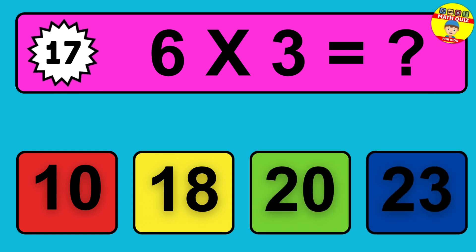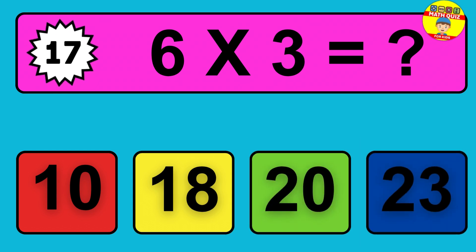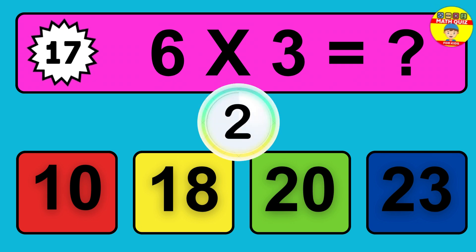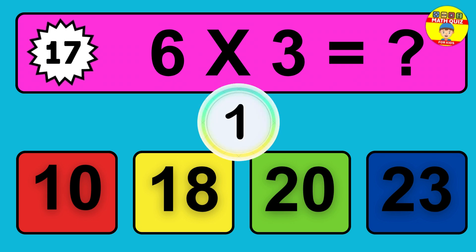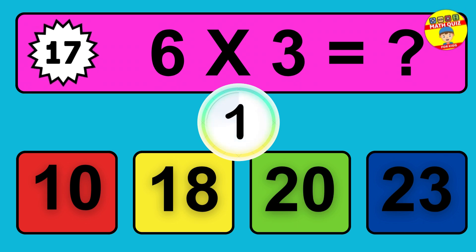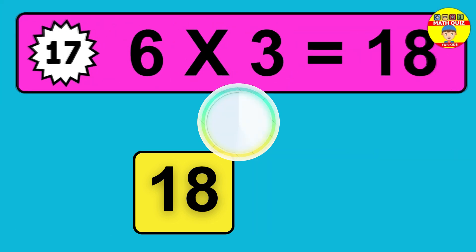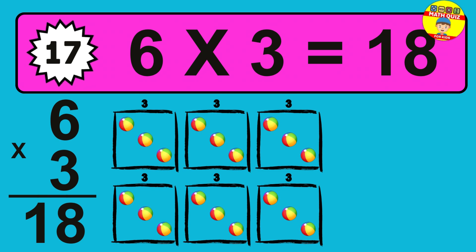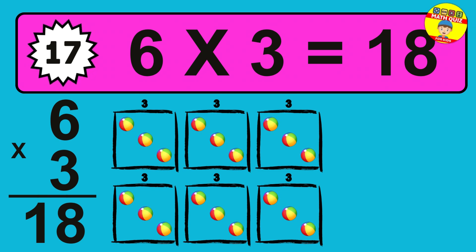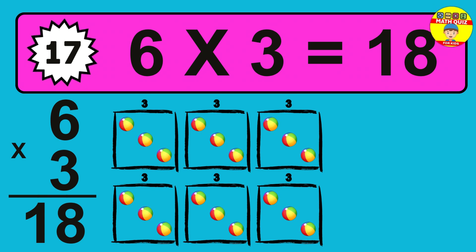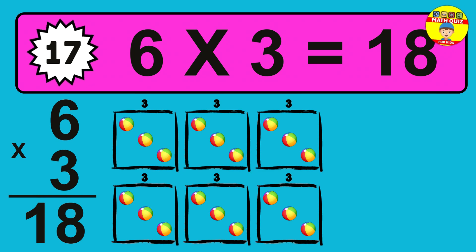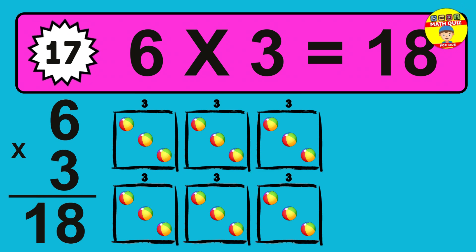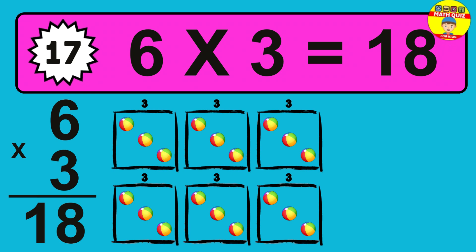Question 17. Six times three equals what? So the answer is six times three is eighteen. To calculate, we have six groups with three balls each one. So how many balls do we have? Eighteen balls.